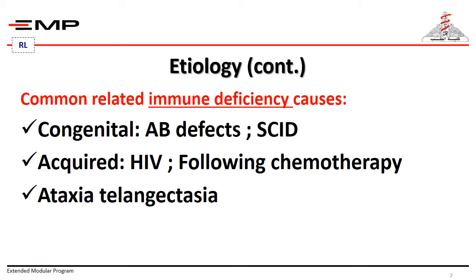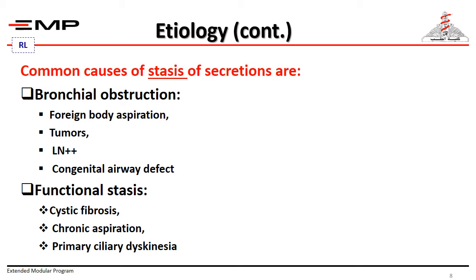In some syndromes like ataxia telangiectasia, which involves ataxia and decreased immunoglobulin production. The third category is causes of stasis — so we have causes of infection, causes of immune deficiency, and causes of stasis — causing bronchial obstruction like foreign body aspiration, tumors, lymph node enlargement, congenital airway defects, or functional causes like cystic fibrosis, chronic aspiration syndrome, and primary ciliary dyskinesia.